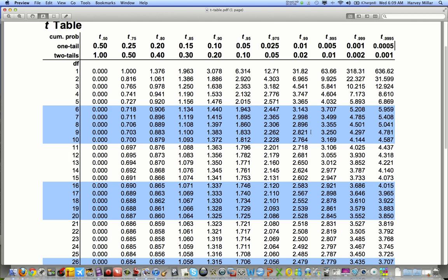But it's between those two t values right here, 2.821 and 3.250. Since we are looking for a one-tail probability, I will look at the line that says one-tail.